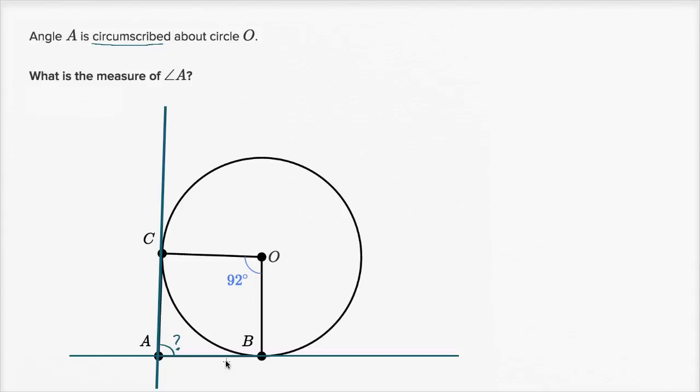The key insight here, and there's multiple ways that you could approach this, is to realize that a radius is going to be perpendicular to a tangent. Or a radius that intersects a tangent is going to be perpendicular to it. So let me label this. This is going to be a right angle, and this is going to be a right angle.